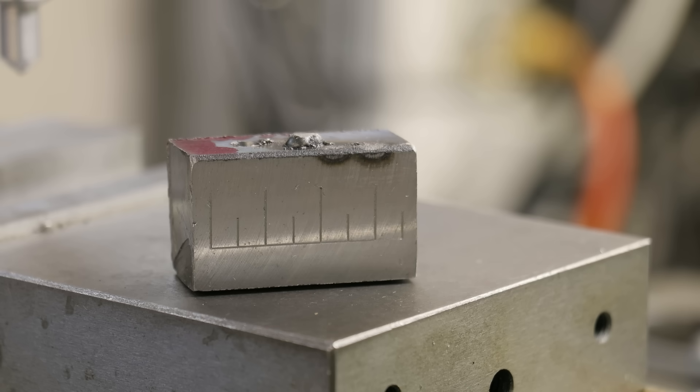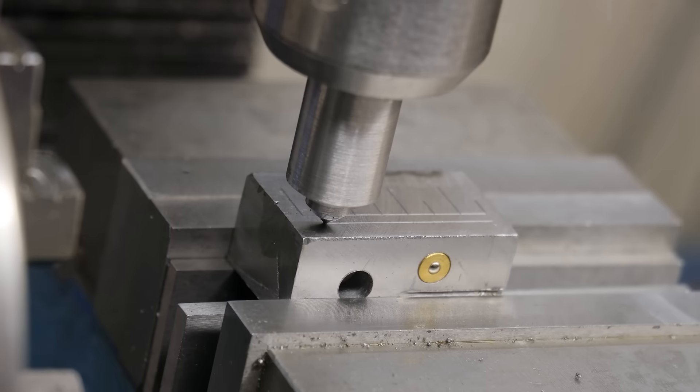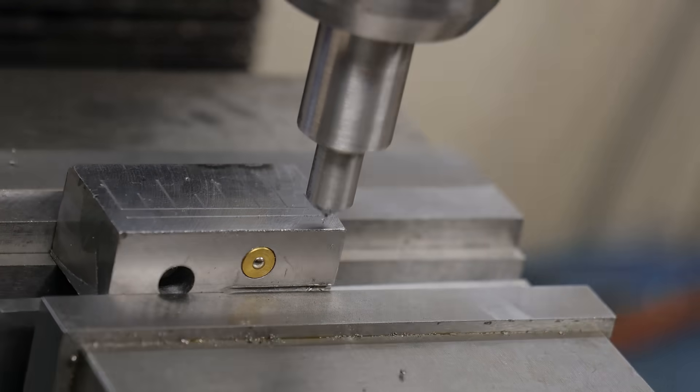And looking at that, that has come out looking really good. Much better than the results I was getting before using a V-bit. What I'll do now is test the consistency of the line widths.